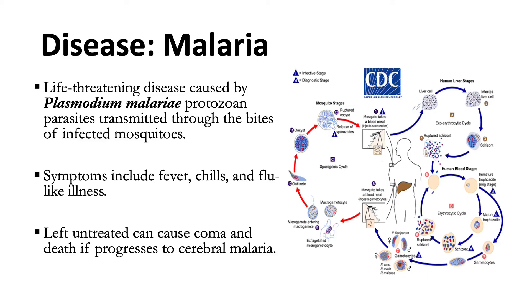The sporozoites infect the liver cells and mature into schizonts, which rupture and release merozoites. After this initial replication in the liver, the parasites undergo asexual multiplication in the erythrocytes. Merozoites infect the red blood cells; the ring-stage trophozoites mature into schizonts, which rupture and release more merozoites. Some parasites differentiate into sexual erythrocytic stages, or gametocytes.